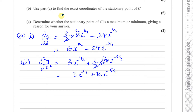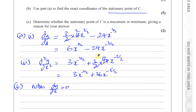Part b says to use part a to find the exact coordinates of the stationary point of C. A stationary point is when the gradient of the curve is 0, so when dy/dx equals 0, because dy/dx is the gradient function. So we equate the expression for dy/dx to 0: we have 6x to the power of a half minus 24 over x to the power of 3 over 2, equals 0.